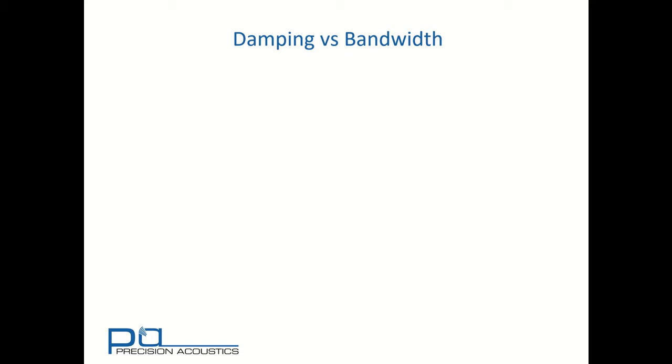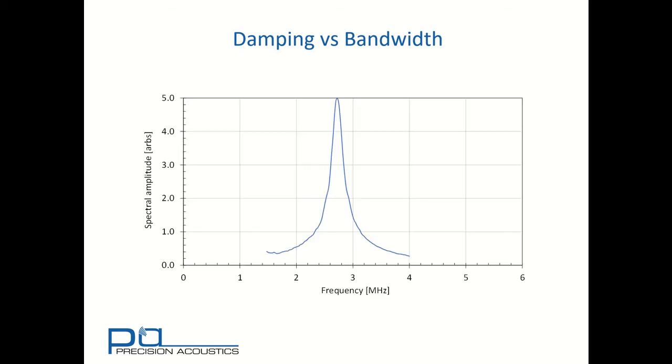That concept is very useful when we come to consider transducers. We'll start here by looking at a relatively narrowband transducer. Here we can see that the output amplitude, whilst centered at about 2.7 MHz, falls off rapidly as we move to either side of that center frequency.